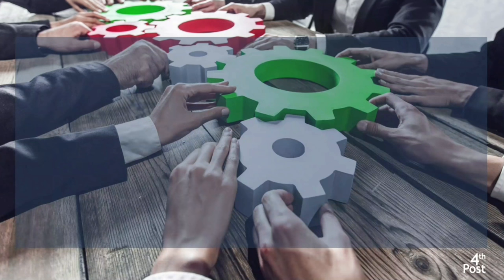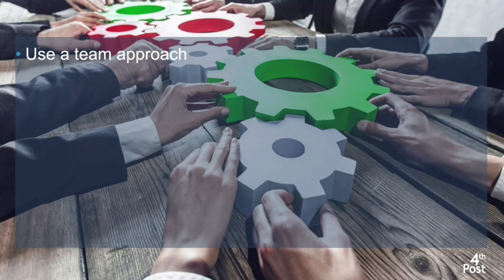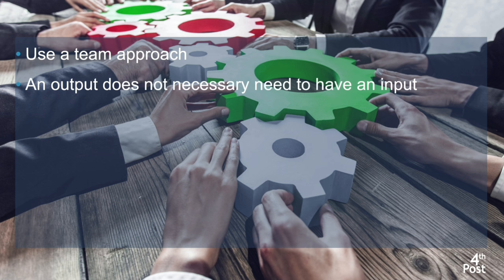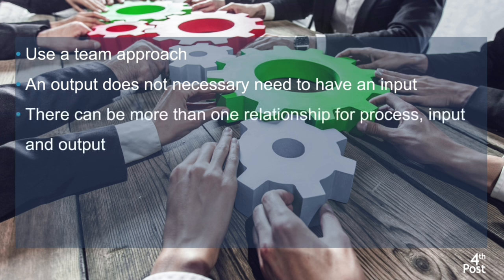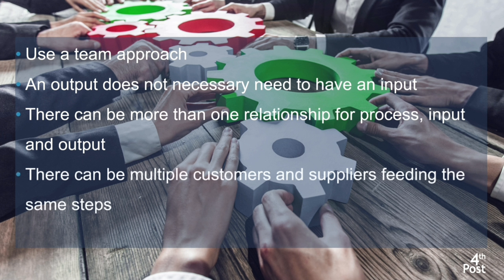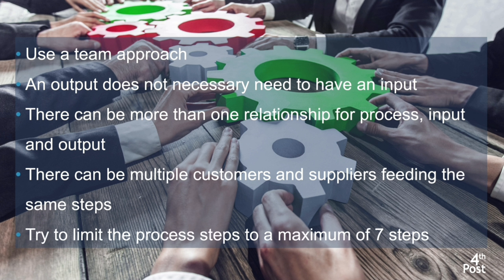I'm going to finish this video by giving you some facilitation tips. First, always use a team approach if possible, because there can be many different entities and departments involved, and others can provide inputs you probably didn't think of. Keep in mind that an output does not necessarily need to have an input, and there can be more than one relationship for process inputs and outputs — there can be multiple customers and suppliers feeding the same step. And finally, try to limit the process steps to a maximum of seven.